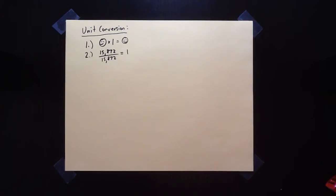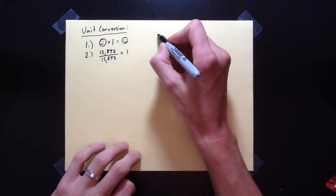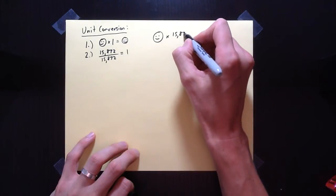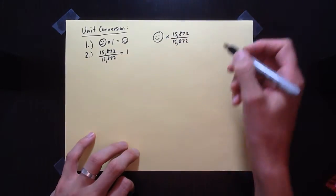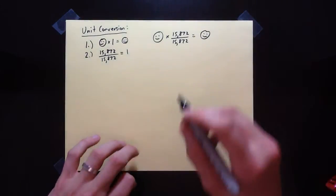Assuming it's not zero, any number divided by itself gives you one. So if I were to say smiley face times 15,872 over 15,872, you would get back smiley face — the same thing. Hopefully you don't dispute that these two mathematical axioms are the case.